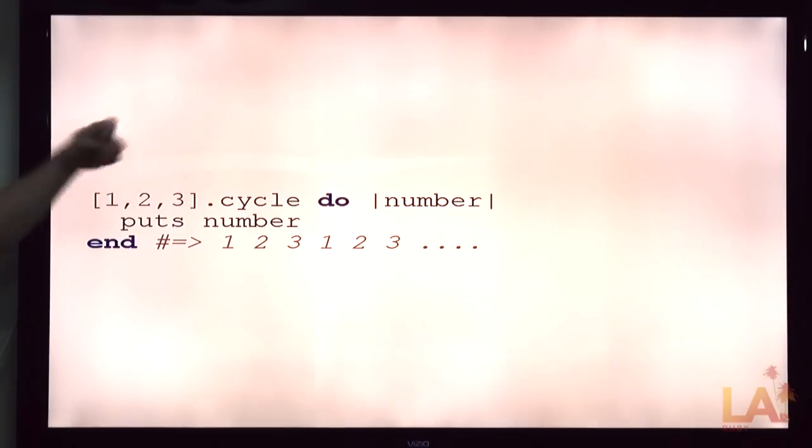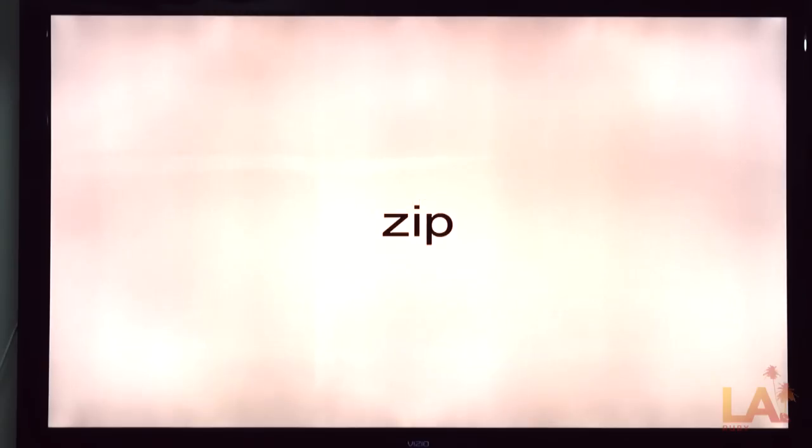Because loop would just repeat the loop over time. This is going to go run the block with one, run the block with two, run the block with three, run the block with two, run the block with three, run the block with three.